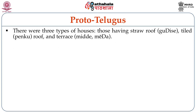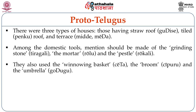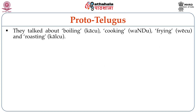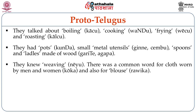There were three types of houses: those having a straw roof (gudise), tiled roof (penku), and terrace (midde or meda). Among domestic tools, mention should be made of the grinding stone (tiragali), the mortar (rolu), and the pestle (rokali). They also used the winnowing basket (cheta), the broom (chipuru), and the umbrella (godugu). They talked about boiling (kachu), cooking (vandu), frying (vechu), and roasting (kalcho). They had pots (kunda), small metal utensils (ginne, chembu), and spoons and ladles made of wood (garite, agapya). They knew weaving (neyu). There was a common word for cloth worn by men and women (koka) and also for blouse (ravike).